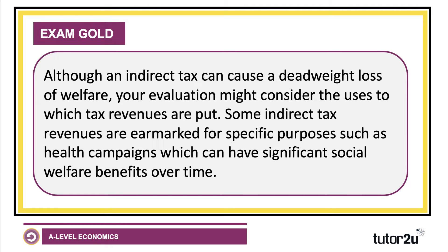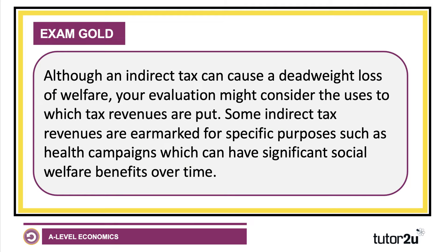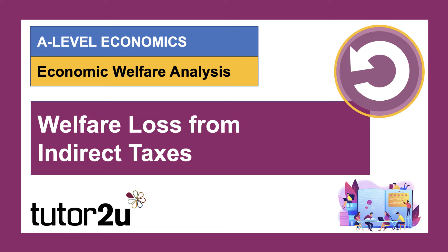Although an indirect tax can cause a deadweight loss of welfare, in your evaluation you might consider the uses to which those tax revenues are put. The government receives a sizable chunk of tax revenue — though that depends on the elasticity of demand and how high the tax is. Some indirect tax revenues are earmarked or hypothecated for specific purposes; they might be used to fund sports in schools or health campaigns, which can have significant social welfare benefits over time. So our analysis shows the welfare effects and the possible deadweight welfare loss from an indirect tax.